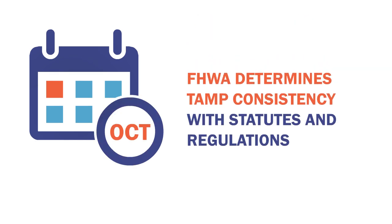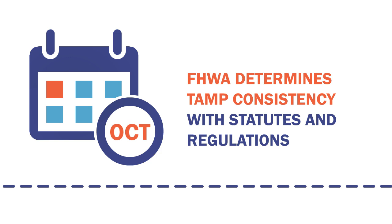The second required FHWA action related to TAMPs is an annual consistency determination. That action evaluates whether the state DOT has developed and implemented a TAMP consistent with the federal requirements. Beginning October 1, 2019, and in each subsequent fiscal year, FHWA determines if a state DOT has developed and implemented a state TAMP consistent with the requirements established by the statute and regulations.